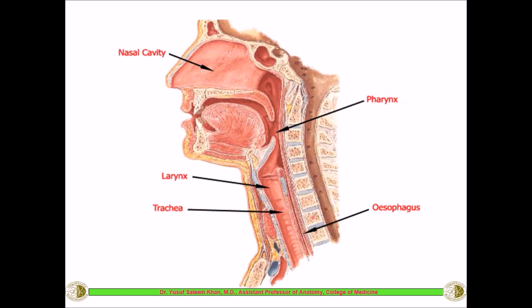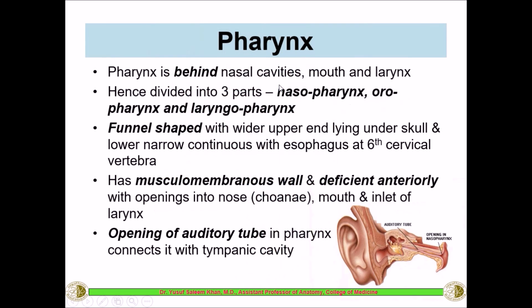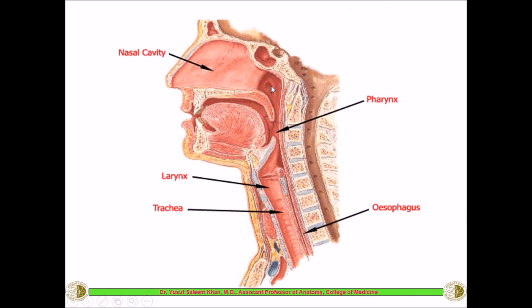The pharynx is that part which is behind the oral cavity, behind the nose, as well as the larynx. It is divided into three parts: the part behind the nose is called the nasopharynx, the part behind the oral cavity is called the oropharynx, and the part behind the larynx is called the laryngopharynx.